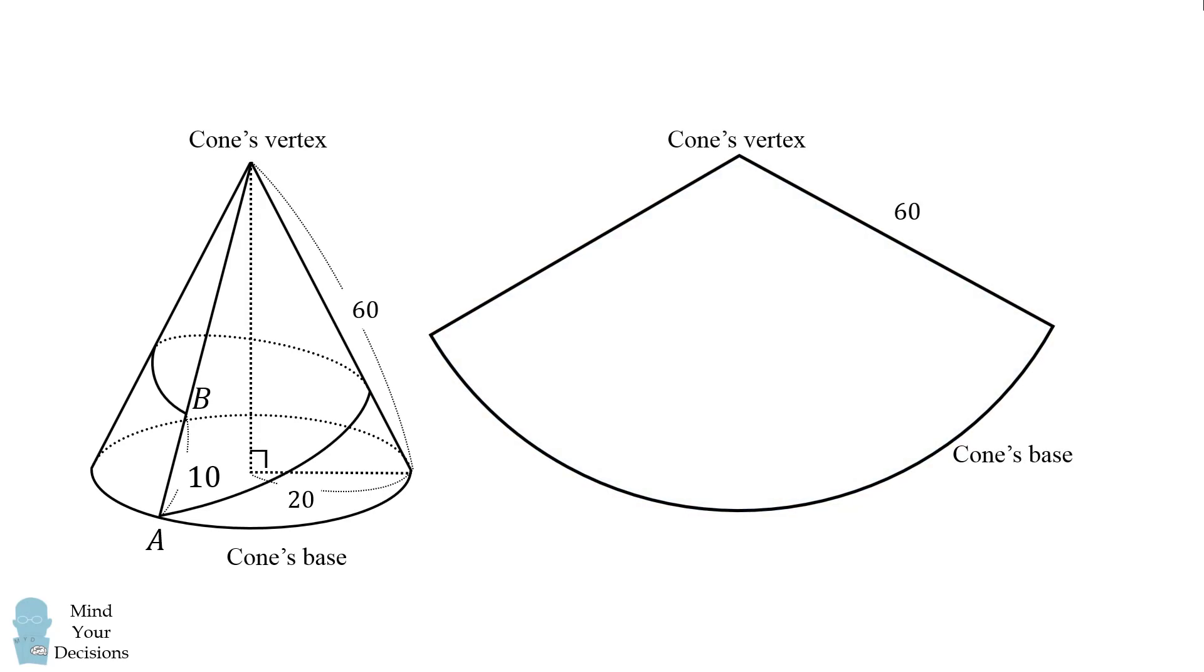So now how can we use this information to continue to solve the problem? Well, the first step is we're going to solve for the central angle of this circular arc. The radius of the cone's base is 20. That means its circumference is 2πr which is 2π times 20, which is 40π.